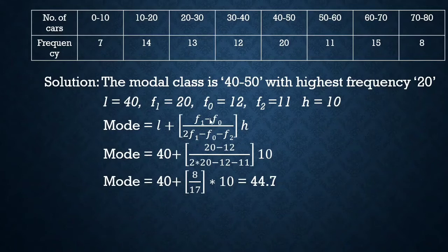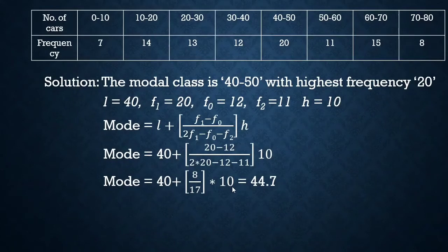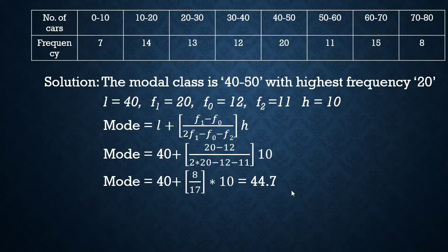Substituting into the mode formula: Mode = 40 + (20−12) / (2×20 − 12 − 11) × 10 = 40 + 8/17 × 10 = 40 + 4.7 = 44.7. So 44.7 cars passed every three minutes on that spot, which is the mode of the given data.